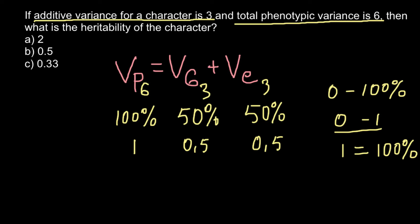On the scale between 0 and 1, total phenotypic variance would equal 1. Our answer would be B—heritability of the character is 0.5, because only this component can be inherited by the following generation.